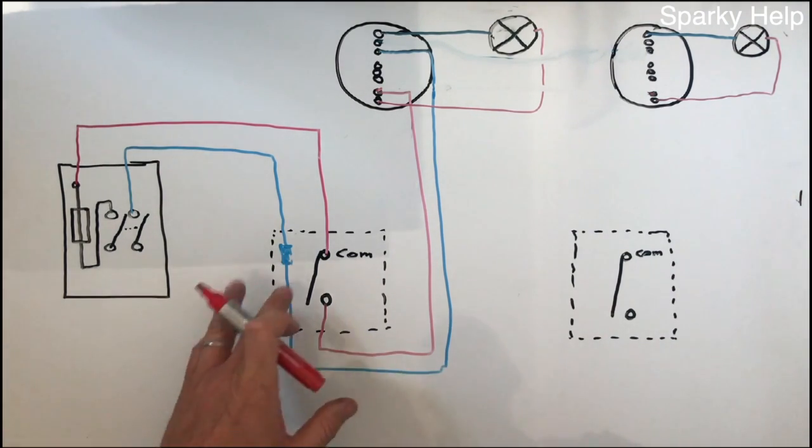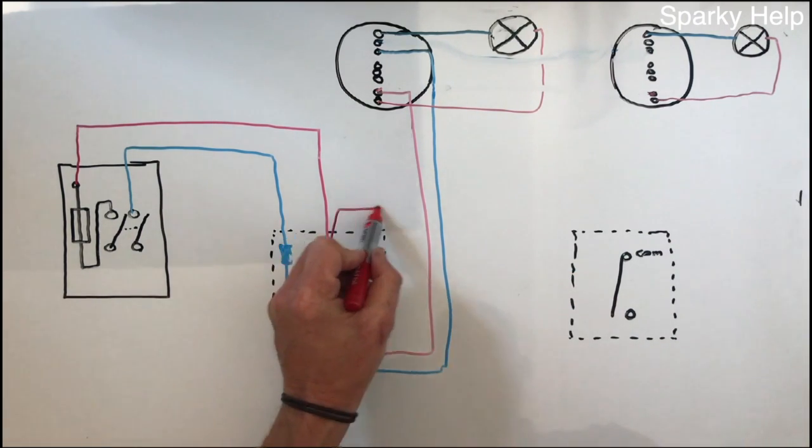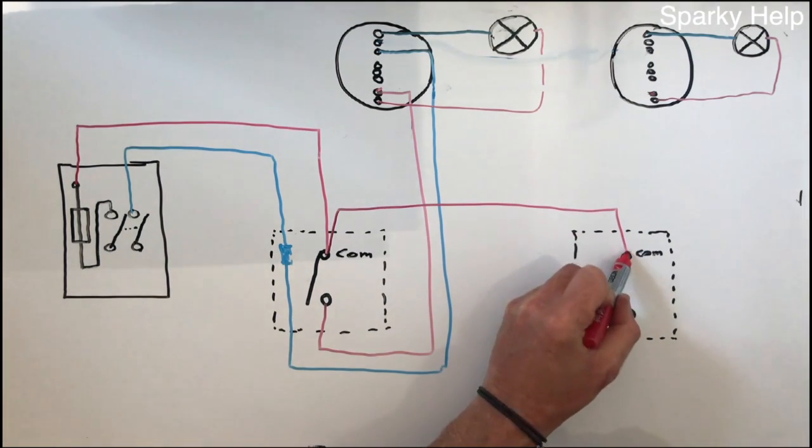So this alternative system, we'd like to take twin and earth cable from here to our next light, so it will come out of the common and connect in there.